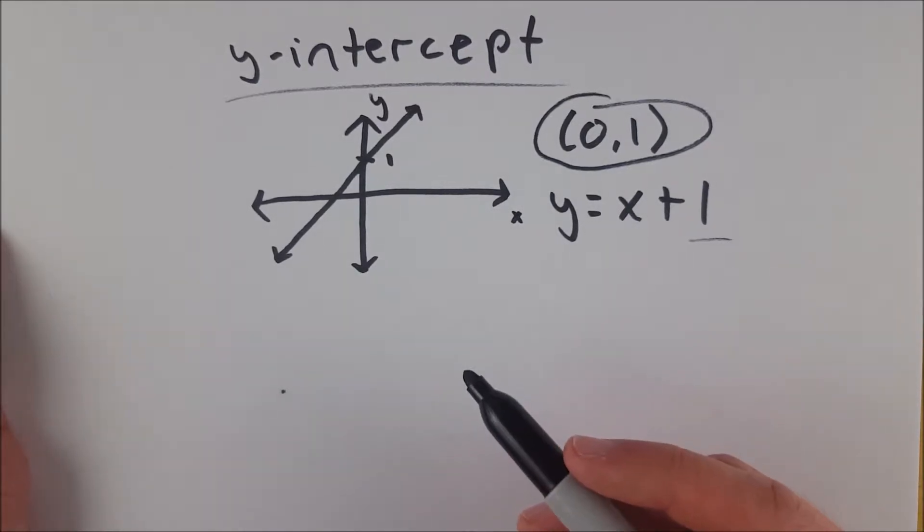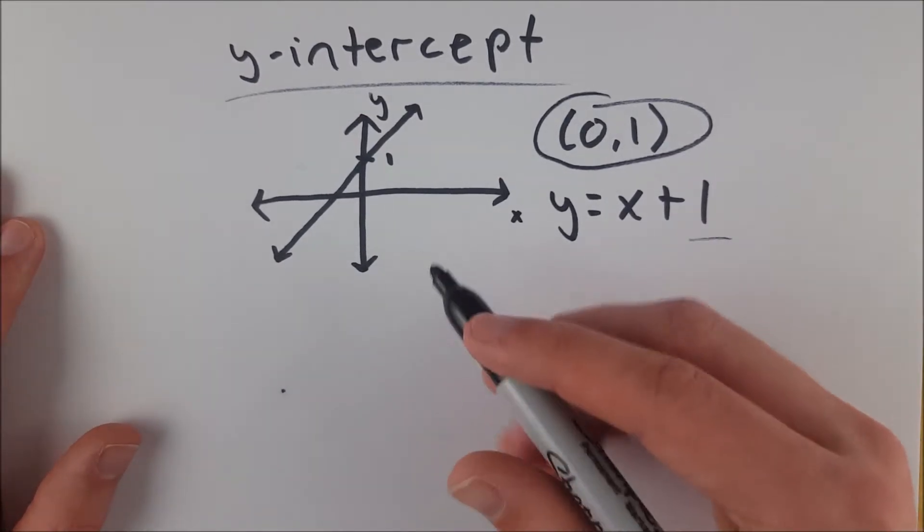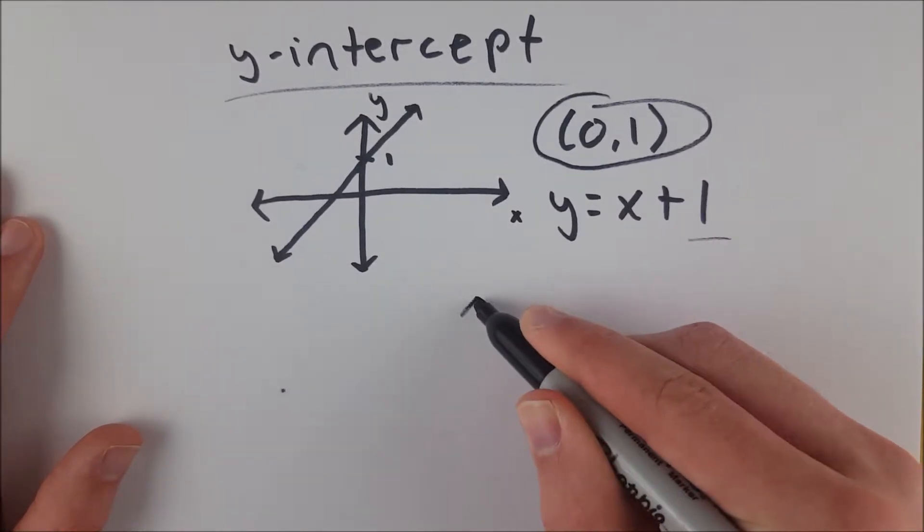Now, every linear function has a y-intercept. There are lines, however, that don't have y-intercepts. But these lines are not functions.